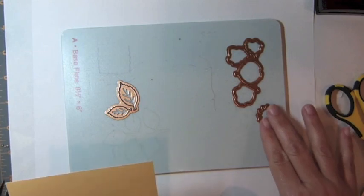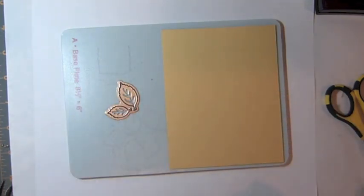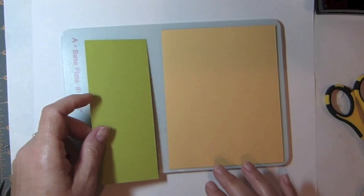Begin by cutting and embossing the petal die template and the petal base die template from yellow cardstock and the leaves from green cardstock.